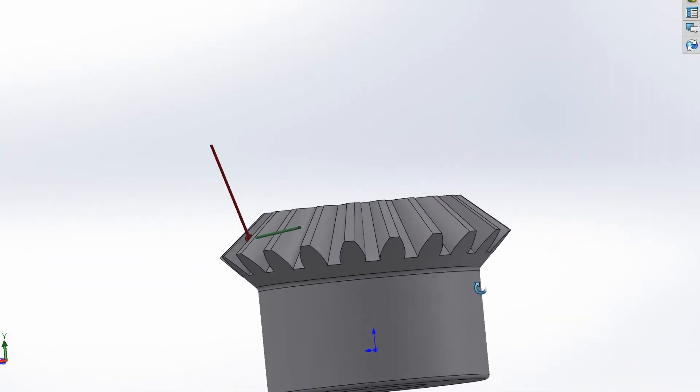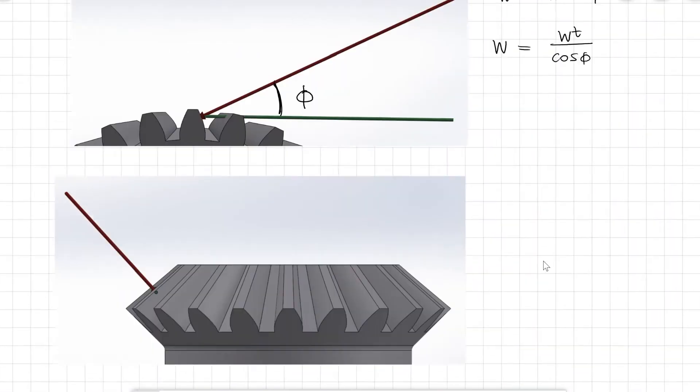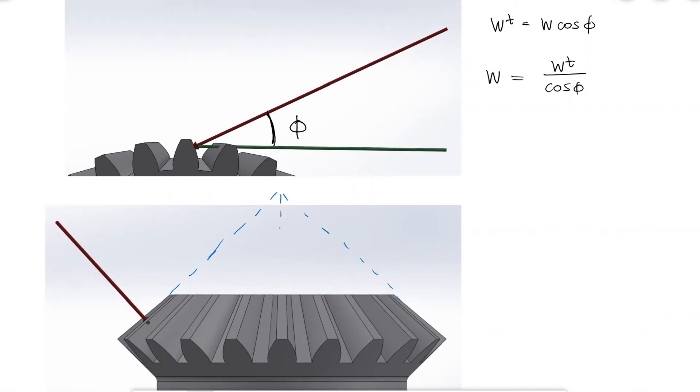Now this vector also has two other components, the radial and the axial component, and both will be given by that pitch angle gamma.